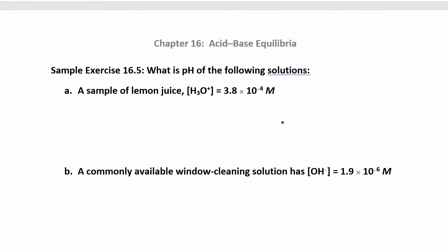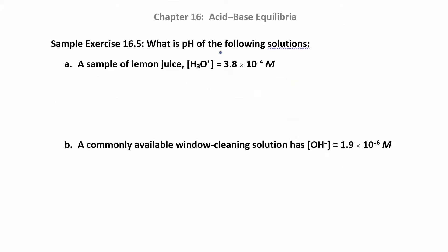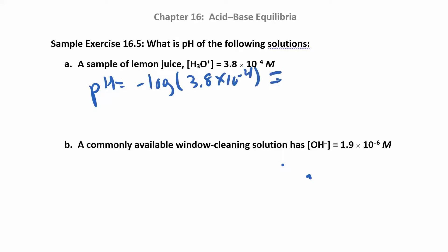Let's practice using this equation. What is the pH of the following solution? If you want to pause the video and calculate your pH, go for it. pH is just the negative log of the hydronium concentration. So with a hydronium concentration of 3.8 × 10⁻⁴, you can figure that out. I got 3.42, and since I had two sig figs, I'm going to put two decimal places — so that's my final answer.